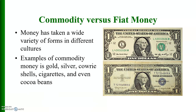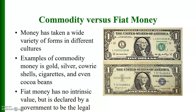Examples of commodity money include gold, silver, shells, cigarettes, and even cocoa beans. Fiat money has no intrinsic value but is declared by a government to be legal tender.